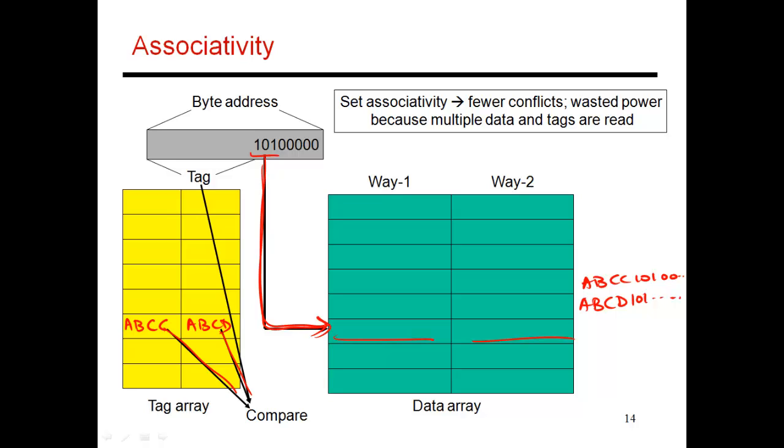The contents of way one are stored over here. So the tag could be ABCC. Tag over here could be ABCD. So if you're alternating between these two elements, ABCC 101 something and ABCD 101 something, both of those blocks of data are being stored in cache. So when I read those things out of the data array, I also read both of these elements out of my tag array. I compare them with the data that is currently being looked up. So if I'm looking for ABCD 101 whatever, I do a comparison, and it tells me that way two does have the data I'm looking for. So both of these are read out, and then from here, the data from way two is then finally sent back to the processor.